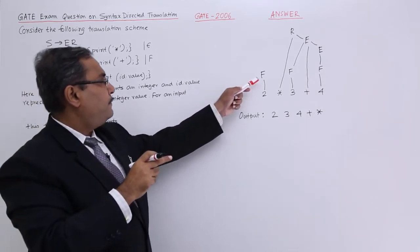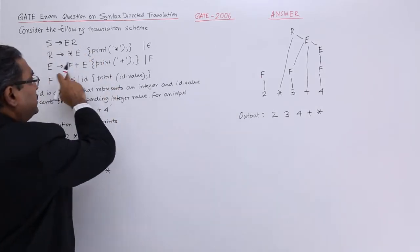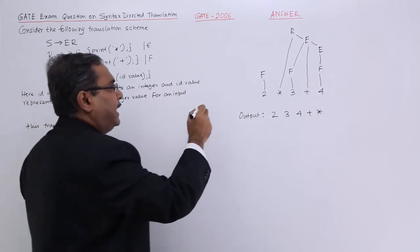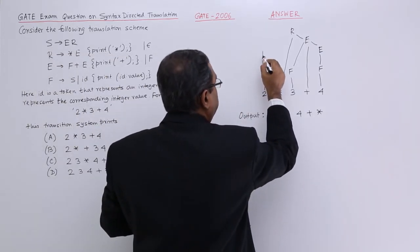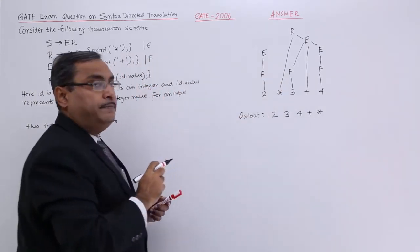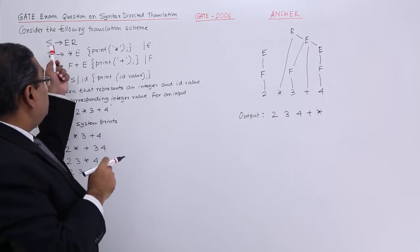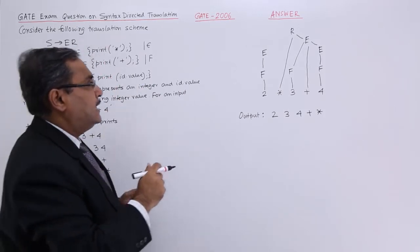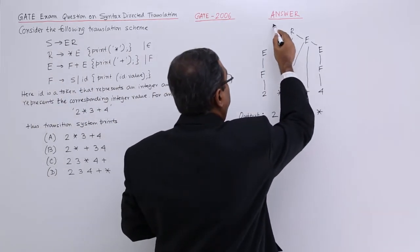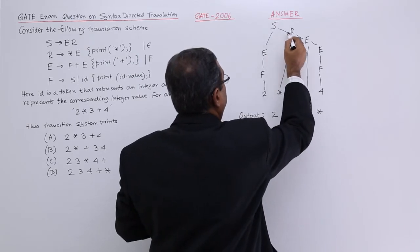Then we are having S produces ER, but it is F. E produces F is there without any semantic action. I shall replace F by E and then S produces ER, no semantic action has been mentioned. S produces ER will be there.